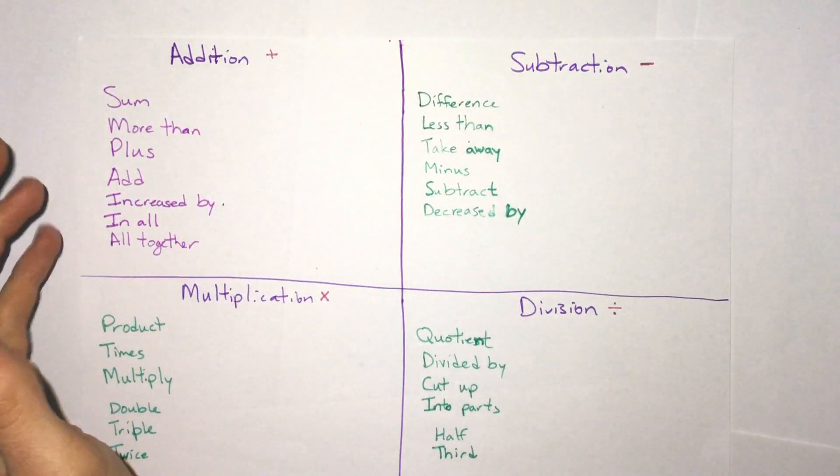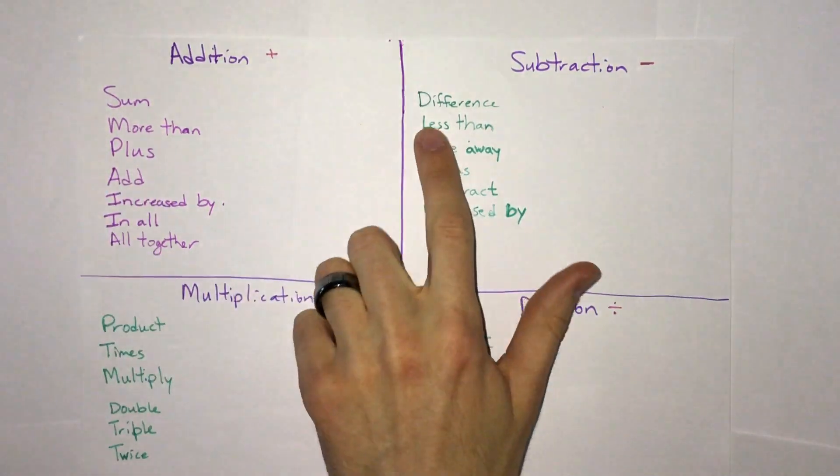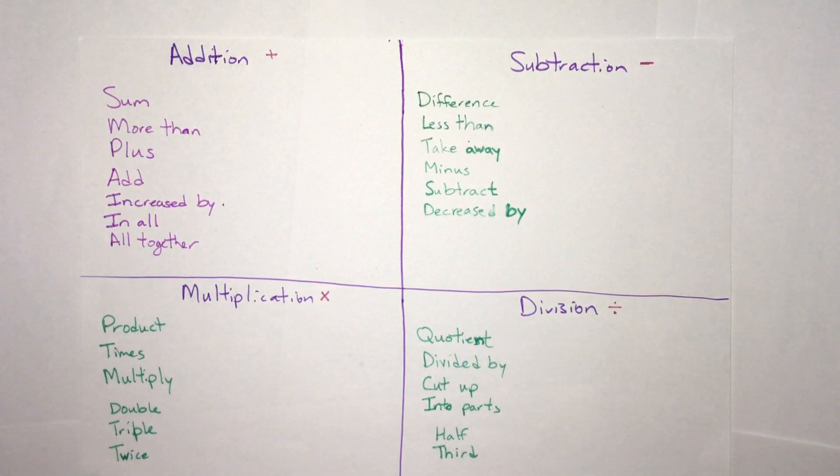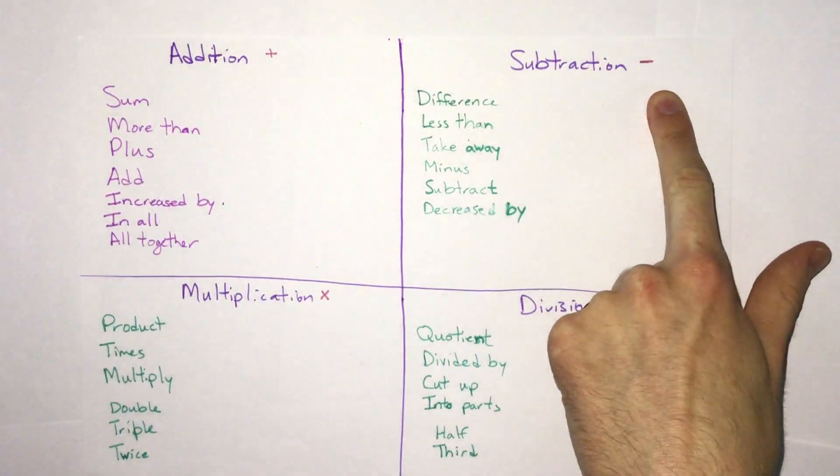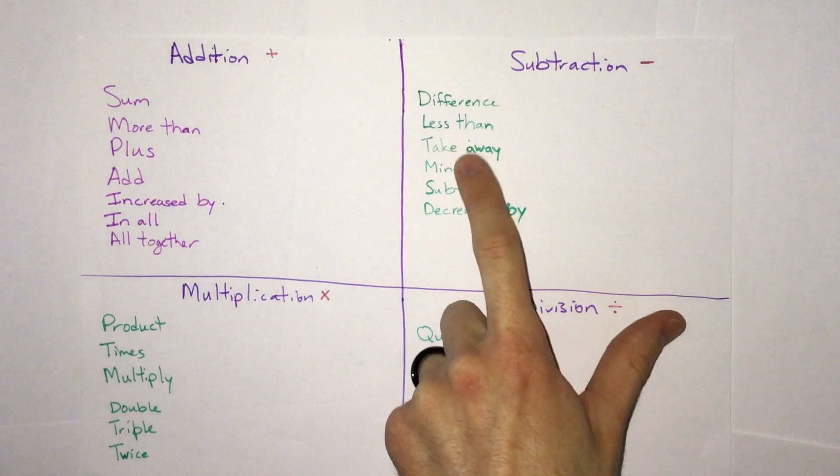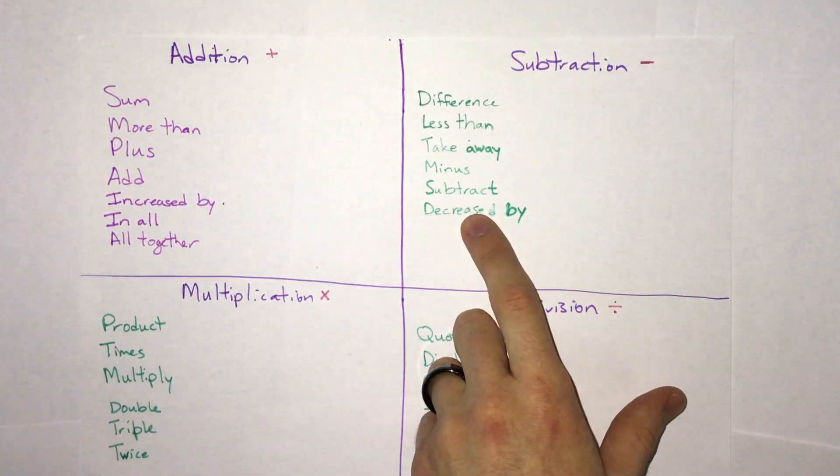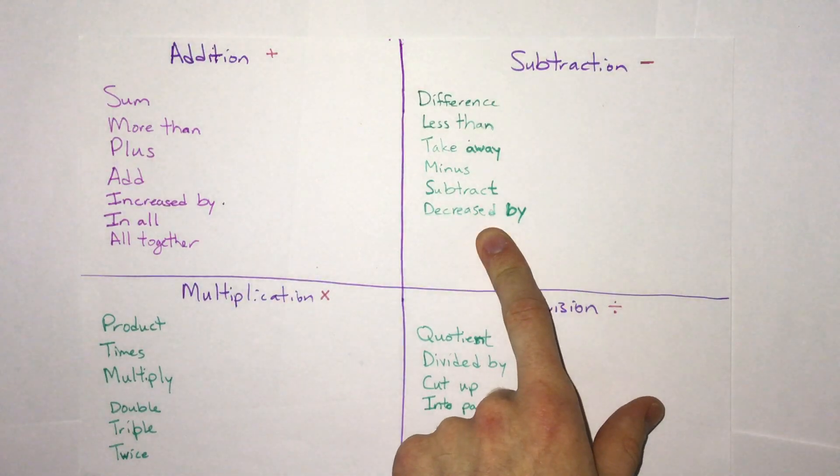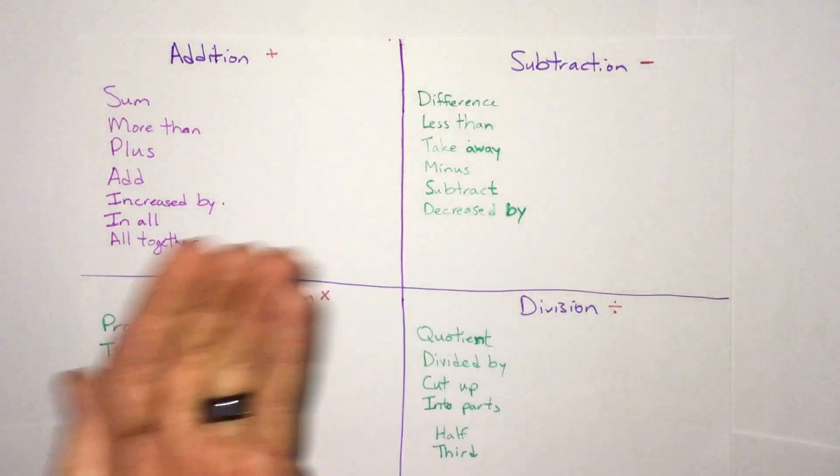Subtraction is the opposite. Most of these words are just opposites, but one of the main words here is difference. The difference between two numbers means you're subtracting them. Also less than, take away, minus, subtract, or subtracted from, decrease by. All of these words can mean subtraction.